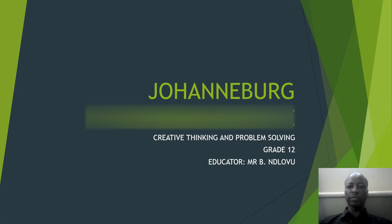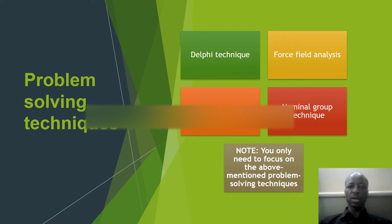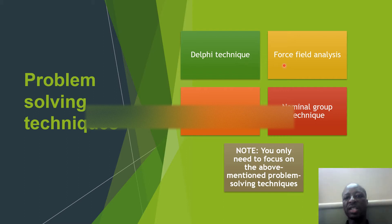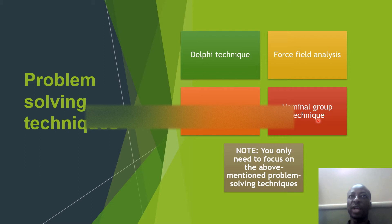We will focus on problem solving techniques. In Grade 12 we only focus on four problem solving techniques: the first one being Delphi technique, the second one being force field analysis, the third one is brainstorming, and the fourth one is nominal group technique. We covered these problem solving techniques in Grade 10 and also in Grade 11.